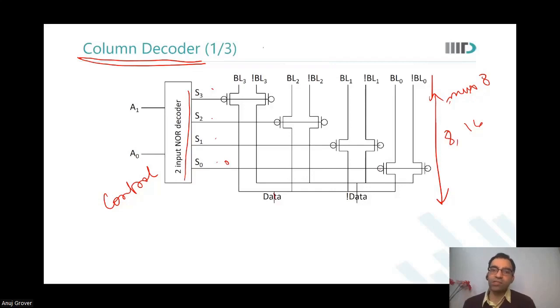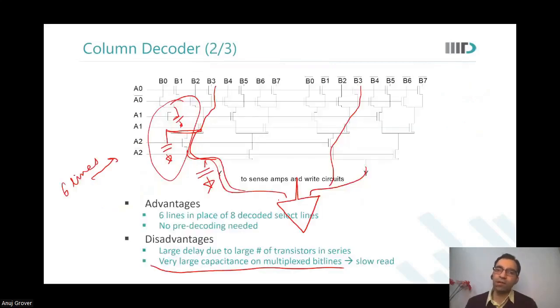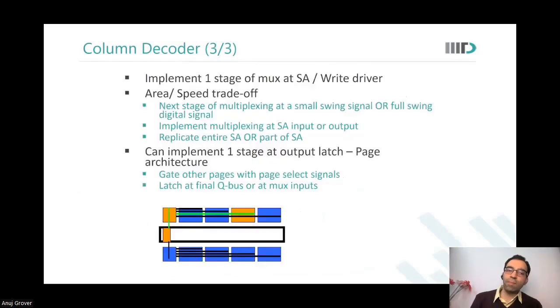So you would use transmission gates in both kinds of circuits. You would want to use transmission gates so that you can transmit both zero and one.